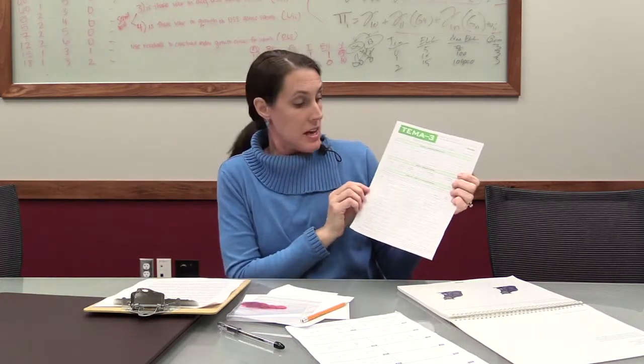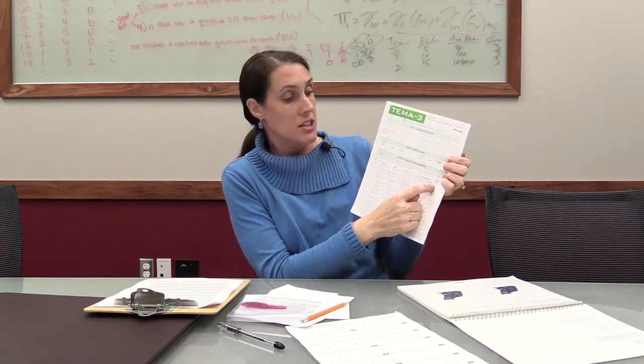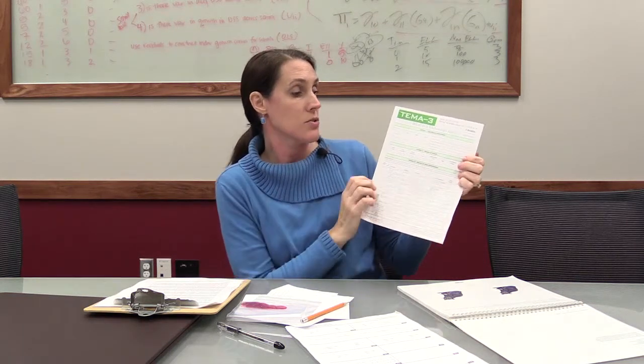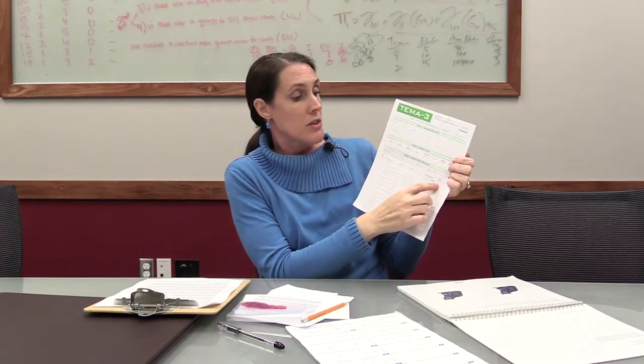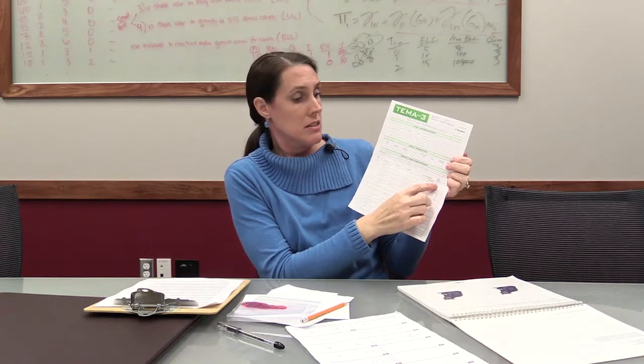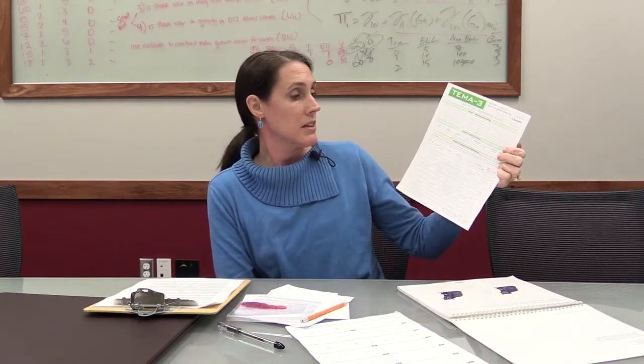Now let's have a look at the score sheet. For each item, such as A, one, it tells you the materials you need. Next is the stimulus, which is just the shortened version of the question in the book. Then the correct answers for each trial, and the criteria that the child must meet in order to get a correct score. All items get either a one or a zero. In order to get a one, it tells you how many of the trials they need to get correct. For example, A one requires three out of three — they have to get A, B, and C correct to get that score.